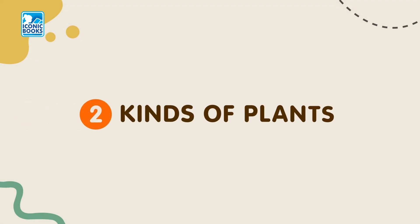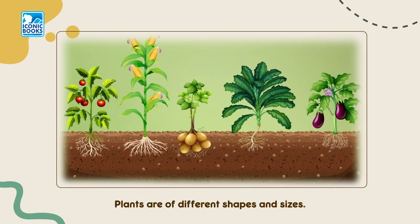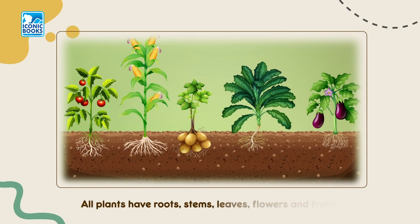Kinds of Plants. Plants are of different shapes and sizes. All plants have roots, stems, leaves, flowers and fruits.